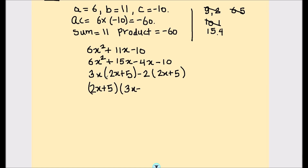Now 2x plus 5 is common in both terms, so we take it out. The factors of 6x squared plus 11x minus 10 are (2x plus 5) times (3x minus 2). These are the two factors which multiply to give this quadratic equation.